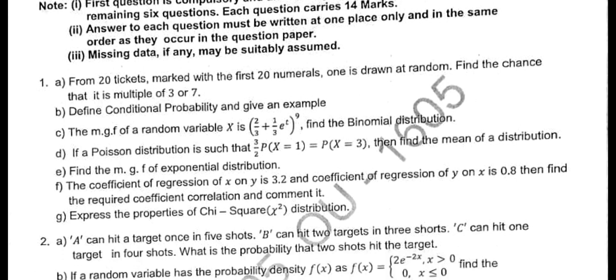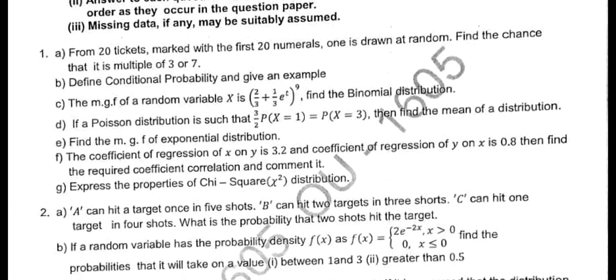The first question has 7 short answers. The first short answer is about 20 tickets — I already explained that. Then C bit is conditional probability. Then MGF of a random variable, D bit is a Poisson distribution problem, E bit is MGF of exponential distribution, then correlation coefficient from unit 4, and G bit is from unit 5.